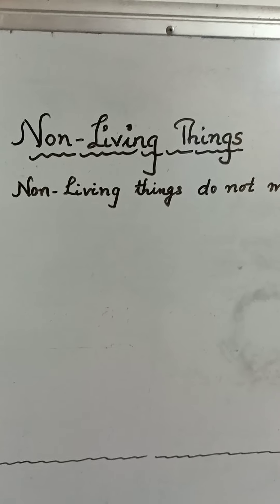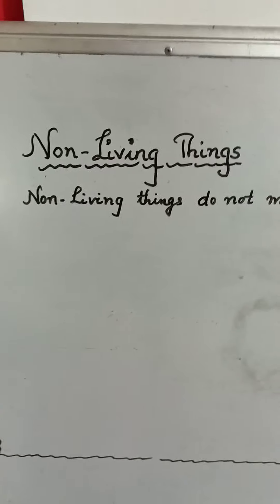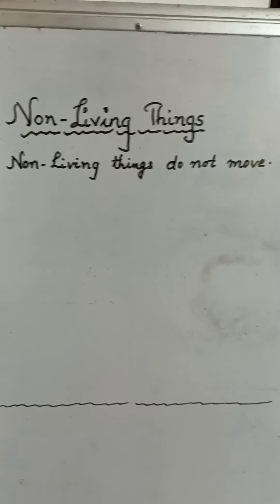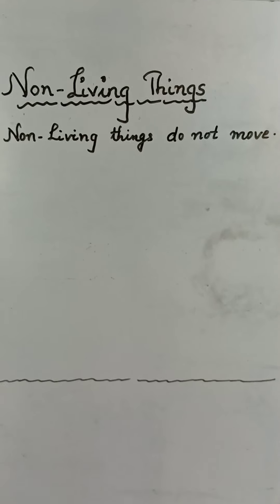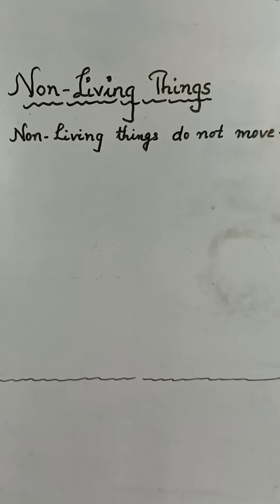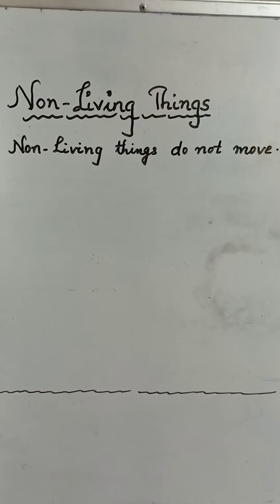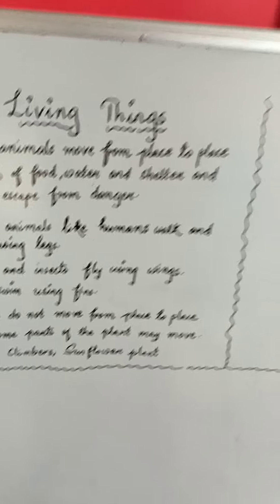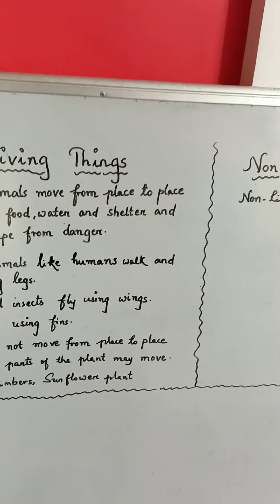Toys, cars, vehicles, aeroplanes — all these things move from place to place, but due to technology. They are not living things; they do not move of their own. They are just moving due to the inventions or technologies introduced by humans. Hope you all understood another difference between living things and non-living things.